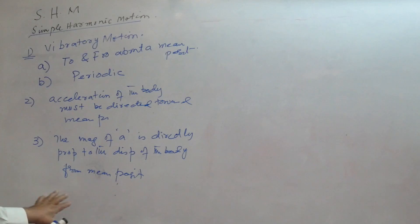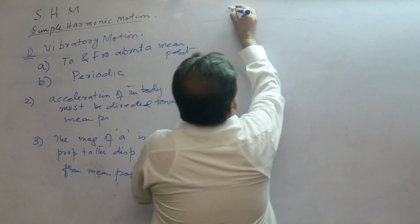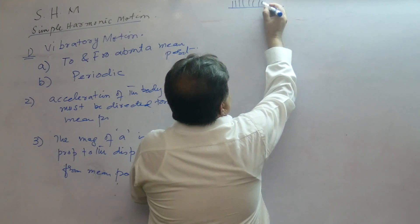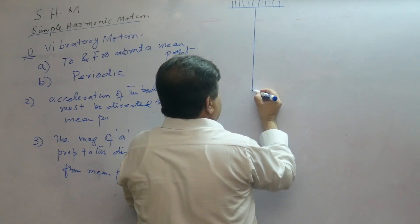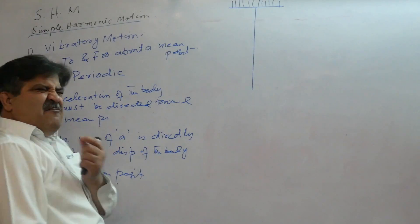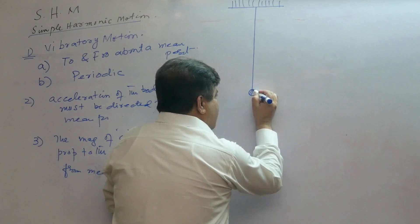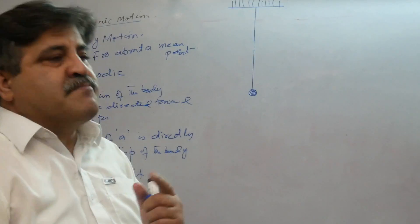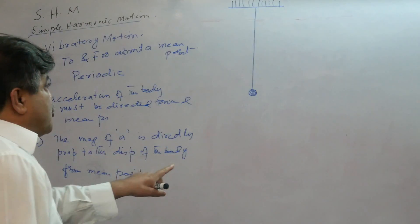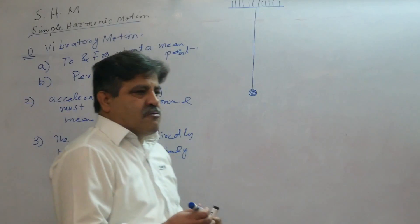By taking a simple pendulum — this is a rigid support, and in physics this term represents a rigid support. This is a very small mass string and a very small mass metallic ball. This arrangement makes a simple pendulum. I am going to show you that this simple pendulum has a motion which is called SHM.